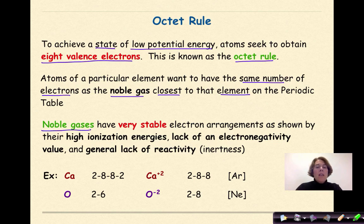Noble gases have very stable electron arrangements, as shown by their high ionization energies, lack of an electronegativity value, which means they're not trying to gain any electrons because they're already stable, and a general lack of reactivity. In other words, inertness. So how do we see this?